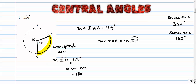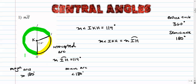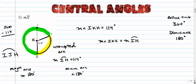There are also things called major arcs. Major arcs are bigger than 180. If I highlight this in green, this would be a major arc — it goes from point I all the way to point H, passing through point J, so you put that in the middle: arc IJH is a major arc. Its measure would be everything except 114, so the whole circle minus 114 gives us 246 degrees. The measure of arc IJH is 246 degrees.